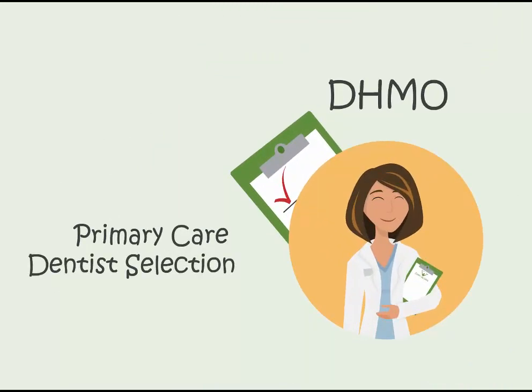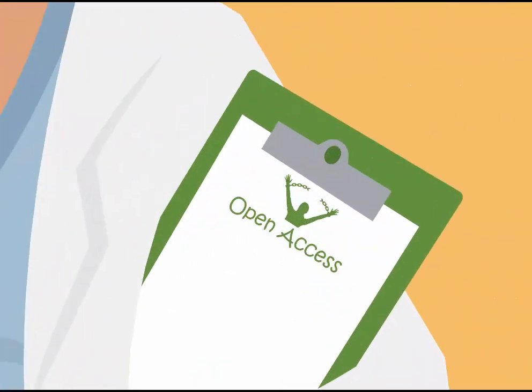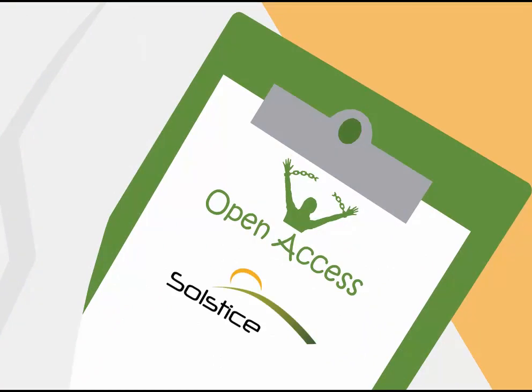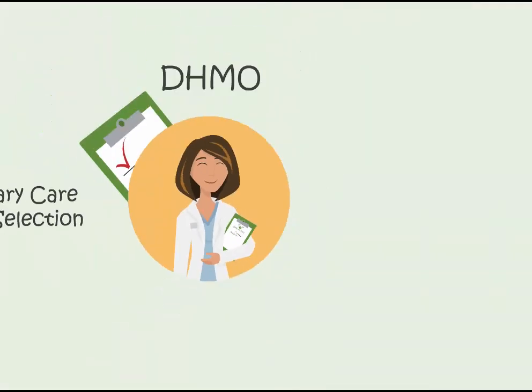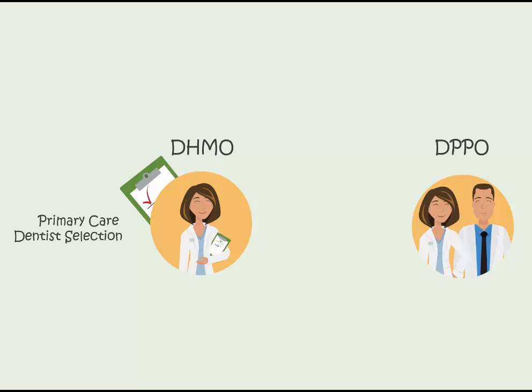Primary care dentist selection. Often with a DHMO plan you must select and be assigned to an in-network primary care dentist — this is the main general dentist you visit for dental care. You can transfer to a new office by calling your insurance company. But not all DHMO plans are created equal; some have an open access network like Solstice plans, which gives you the flexibility to receive services from any in-network provider and switch providers as many times as you wish without contacting the insurance company. On dental PPO plans, you don't have to be assigned to a primary care dentist and have the freedom to visit any dentist.